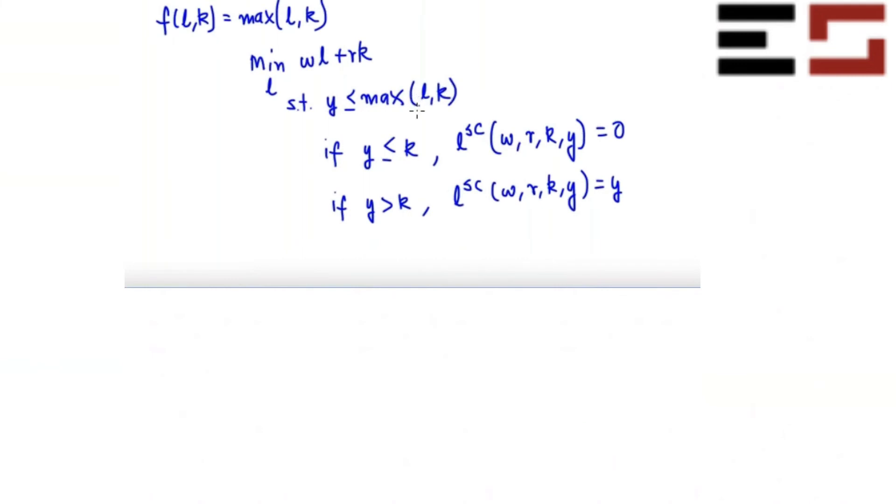Okay, so the only thing that you can do is change labor. And in order to make the max of this greater than or equal to y, you have to employ at least y units of labor. Right? Yes or no? So it's important just to see the problem and then do it.